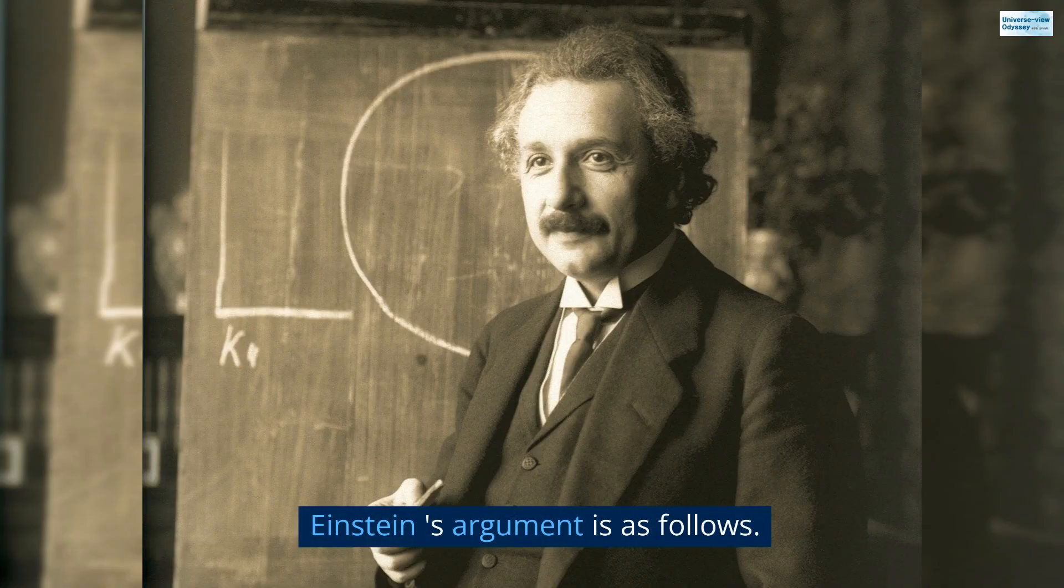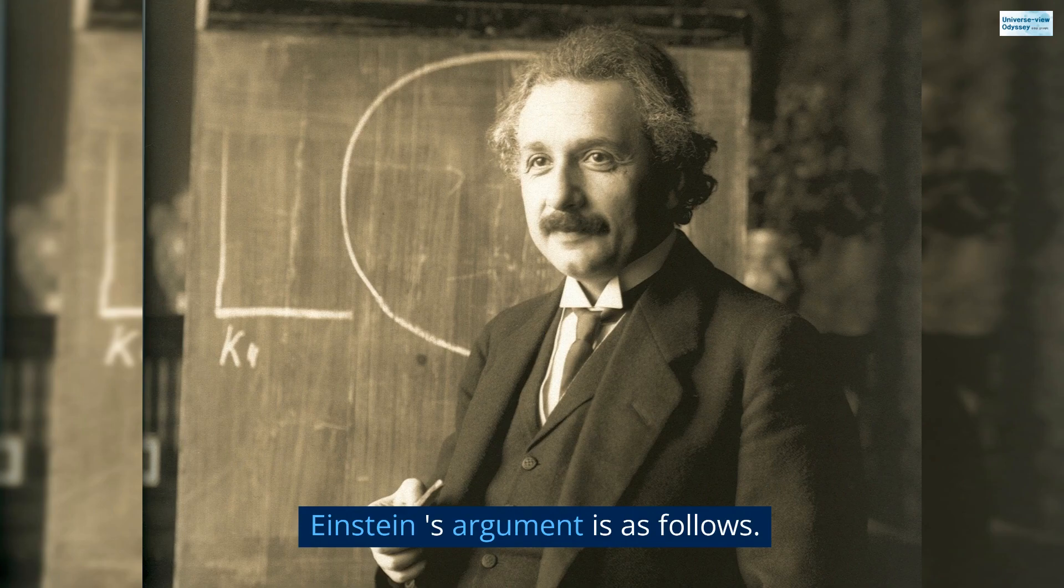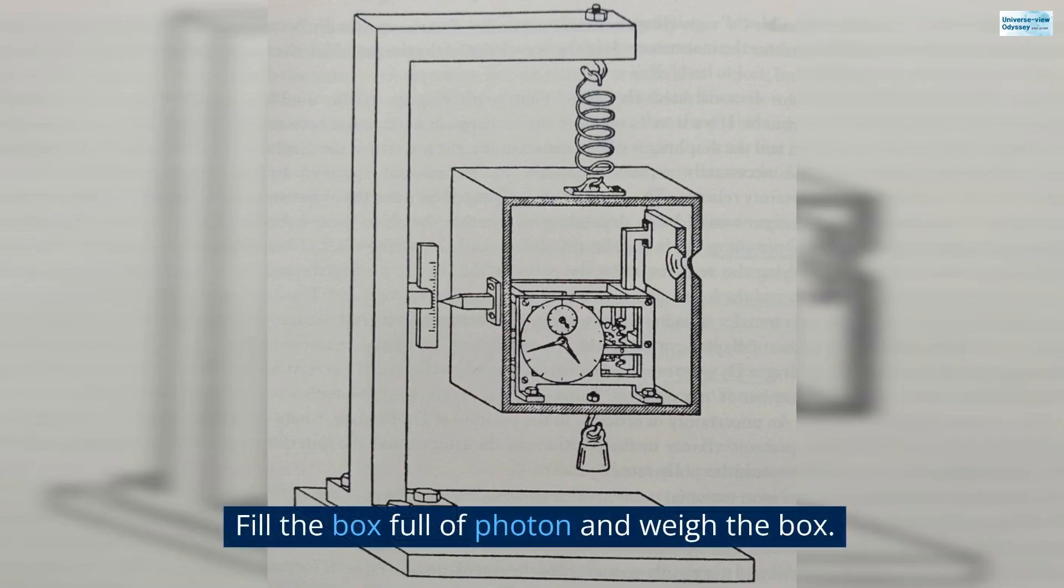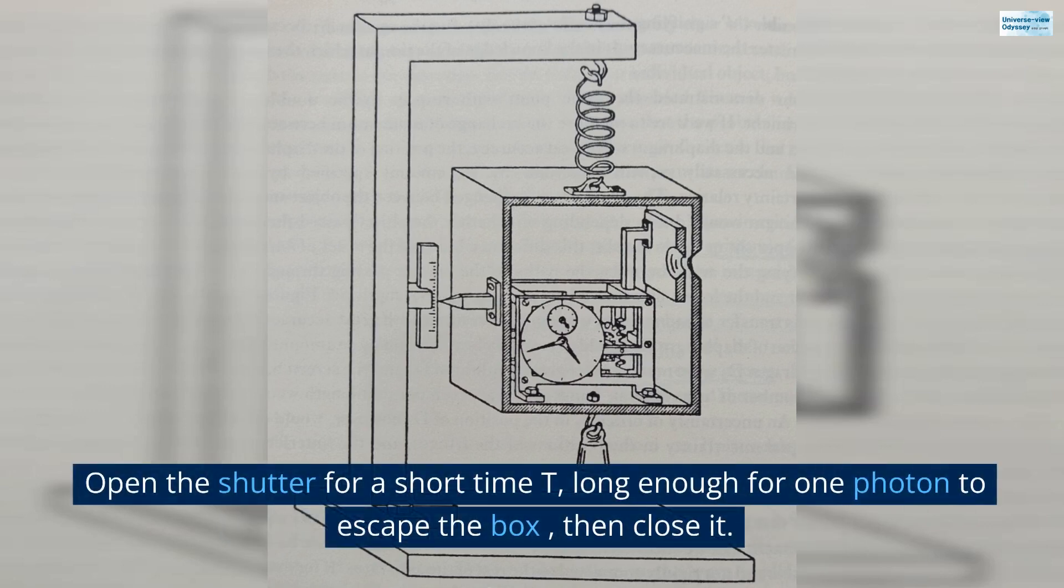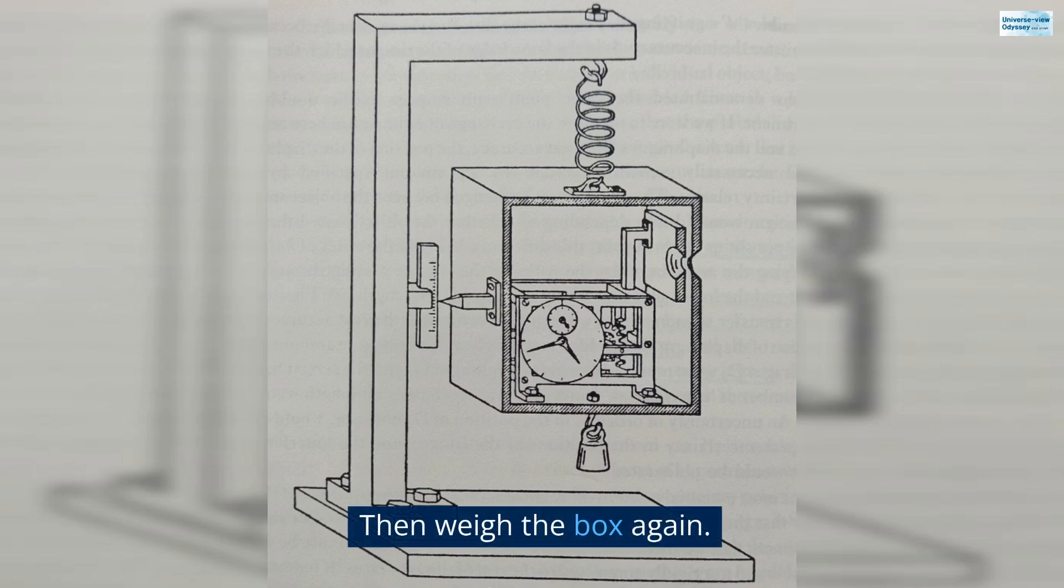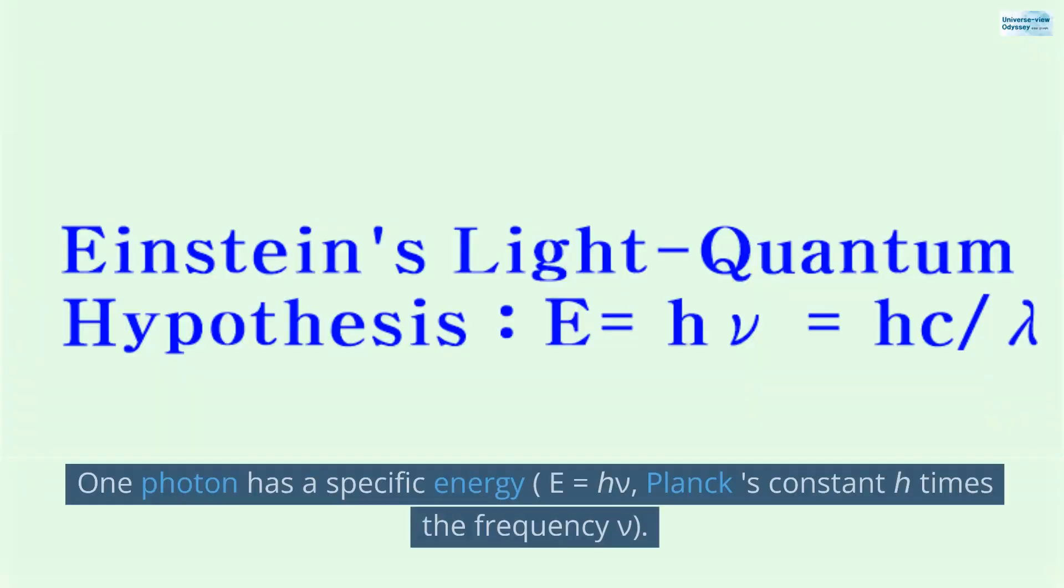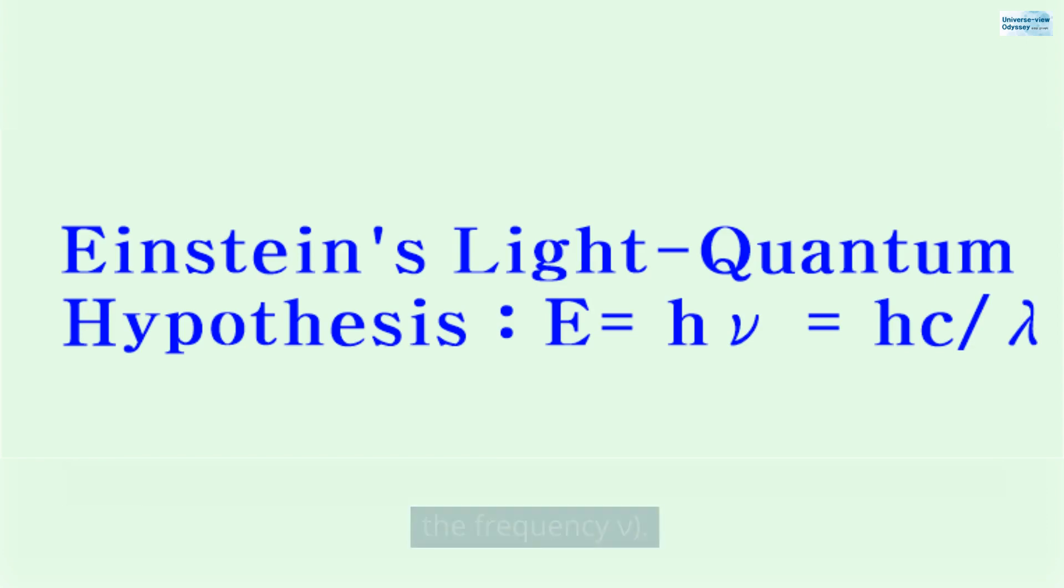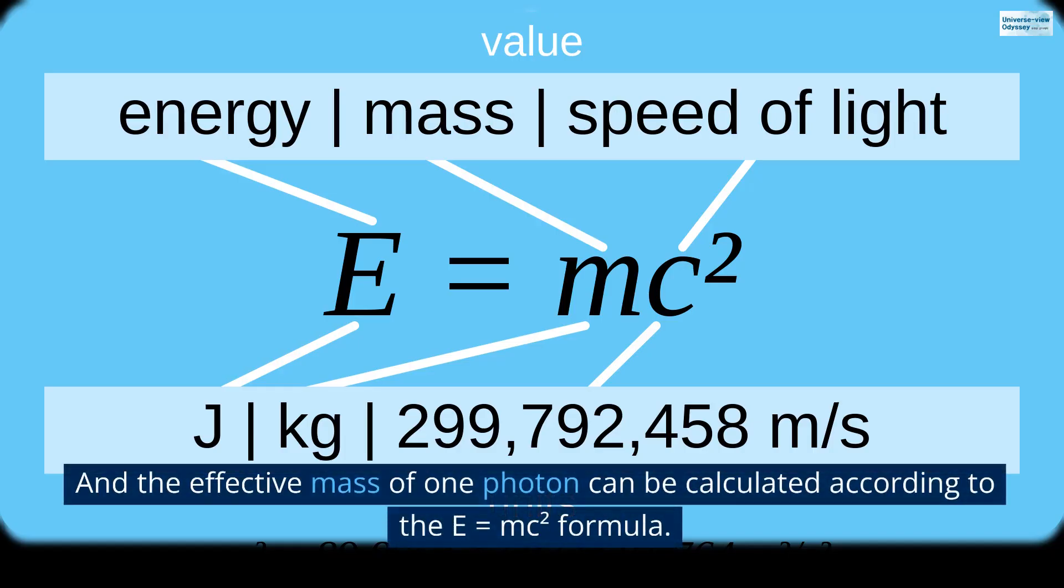Einstein's argument is as follows. Fill the box full of photons and weigh the box. Open the shutter for a short time T, long enough for one photon to escape the box, then close it. Then weigh the box again. One photon has a specific energy E equals H nu, Planck's constant H times the frequency nu. And the effective mass of one photon can be calculated according to the E equals mc squared formula.